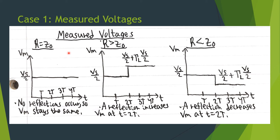Here we have sketched out the measured voltages for this case. With R equals Z0, the measured voltage remains at Vs over 2 since no reflections occur. If R is greater than Z0, the measured voltage jumps up from Vs over 2 to Vs over 2 plus the reflection coefficient times Vs over 2 at time 2T when the reflection reaches the generator end. If R is less than Z0, the opposite occurs — the measured voltage jumps down at 2T to Vs over 2 plus the reflection coefficient times Vs over 2.